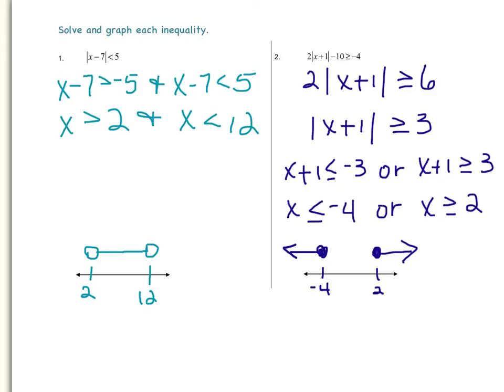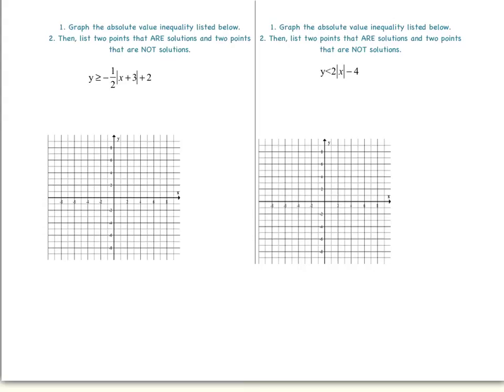Now let's look at some examples on the coordinate grid. When solving absolute value inequalities by graphing, we will first graph the inequality like we would an equation. The only difference is we need to know if it's a solid line or a dashed line, and then we will shade the appropriate area to know where our solutions lie.